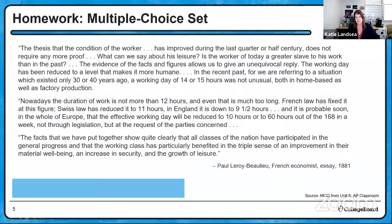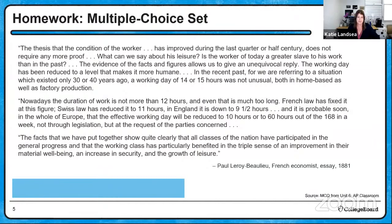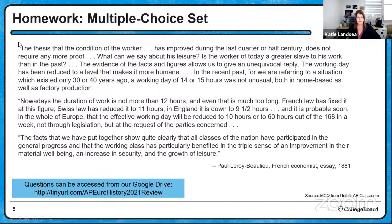One of your homeworks last night was a set of multiple choice. We're going to quickly go through the answers and talk through why the correct answer was correct. If you didn't do these and want to take a minute, stop the video, practice the multiple choice — it's just one set — and then you can see us unpack the right answer. This stimulus is by Paul Leroy Beaulieu, a French economist, and it's an essay from 1881. The first thing you want to do is really zone in on what the source of the stimulus is, particularly when it's a text stimulus that's long like this.